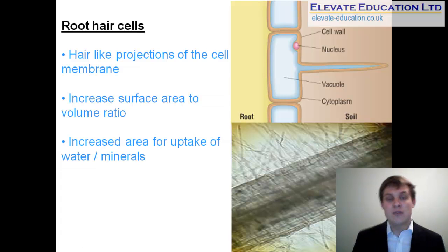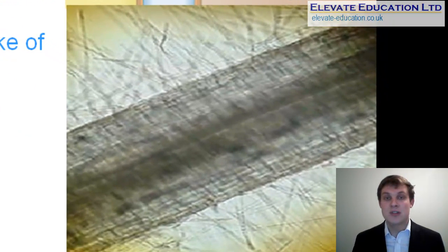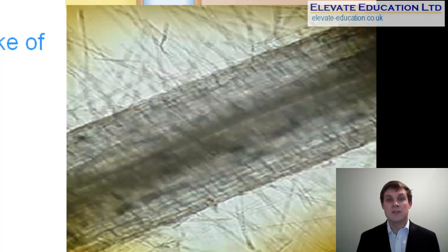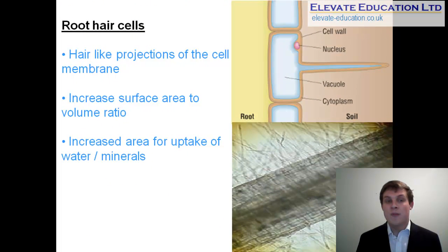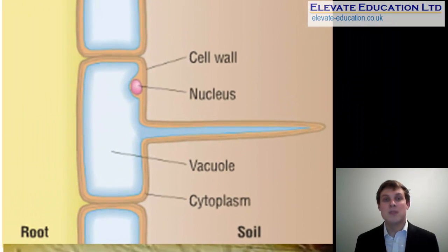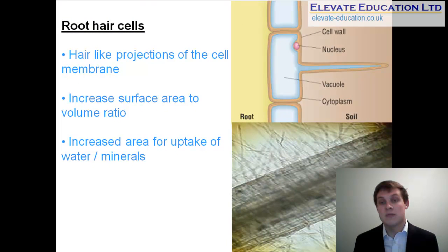The last type of cell to look at is the root hair cell, found on the roots of plants. Coming off the side of the root, fine hair-like projections can be seen, which are extensions of the membrane in the root hair cells located on the outside of the plant's root. These cells are specialized because they contain large outfoldings of membrane forming hair-like projections that stick away from the plant into the soil. The role of this specialization is to increase the surface area to volume ratio of the cell, making these cells more efficient at taking up both water and minerals from the soil for the plant.